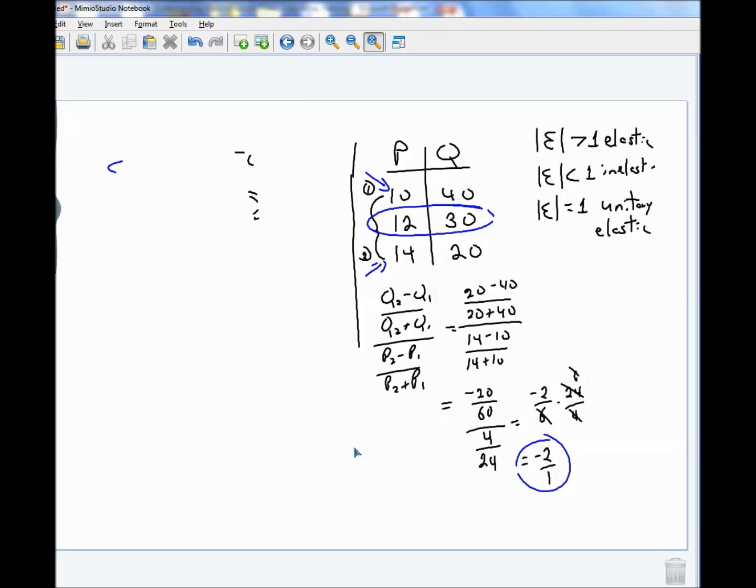So now we're going to calculate point elasticity. And the formula is 1 over the slope times P over Q. Calculate point elasticity where P is 12. So we're going to let P be 12. And when P is 12, Q is 30. So here we go. It's 1 over the slope times 12 over 30. So far, so good. But now I need to find the slope of that thing over there.